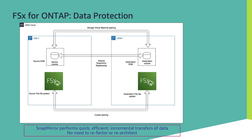Once the relationship is created, you have to initialize it to initiate the baseline transfer. The first baseline transfer is going to run for a period of time depending on the amount of data in the source file system that needs to be replicated to the destination. But once that baseline transfer is completed, every subsequent transfer is incremental and can be automated by putting in a schedule depending on your RPO requirements. For example, if your RPO is every 12 hours, you can put in a schedule to ensure that your SnapMirror updates once every 12 hours.